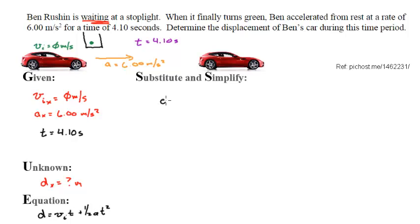I don't know what distance is, so I'm just going to write it again, but I do know what velocity initial is. That's 0 times time, 4.10, plus 6.00 times 4.10, and that whole quantity divided by 2 squared.